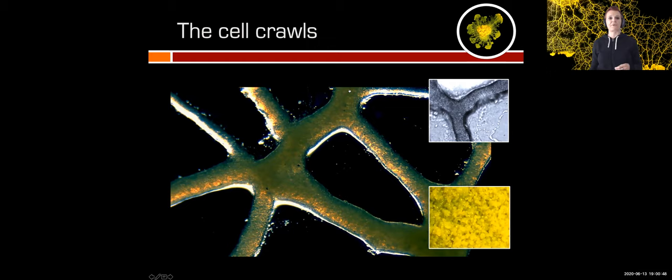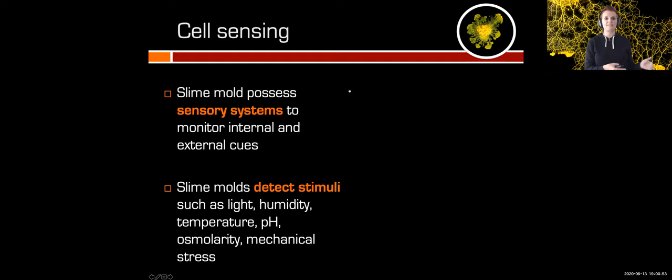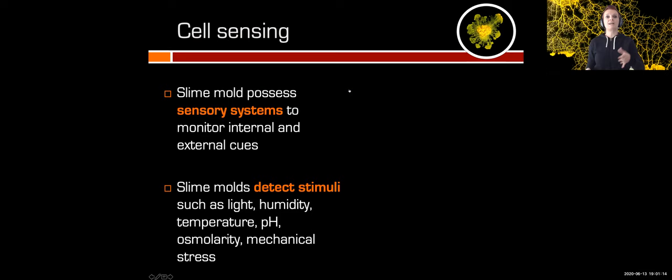The slime mold also has a sensory system to monitor internal and external cues. They are able to detect stimuli in their environment such as light, humidity, temperature, pH, osmolarity, mechanical stress, and also chemical substances such as nutrients. When nutrients are present, the slime mold can follow the gradient using chemotaxis.